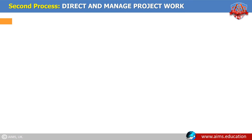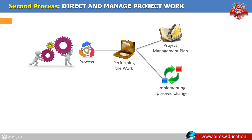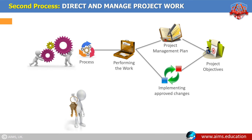Second process: direct and manage project work. This process allows you to lead the team and perform the work according to the project management plan, and also implement the approved changes to achieve the project objectives. Key benefit: this process provides overall management of the project work.